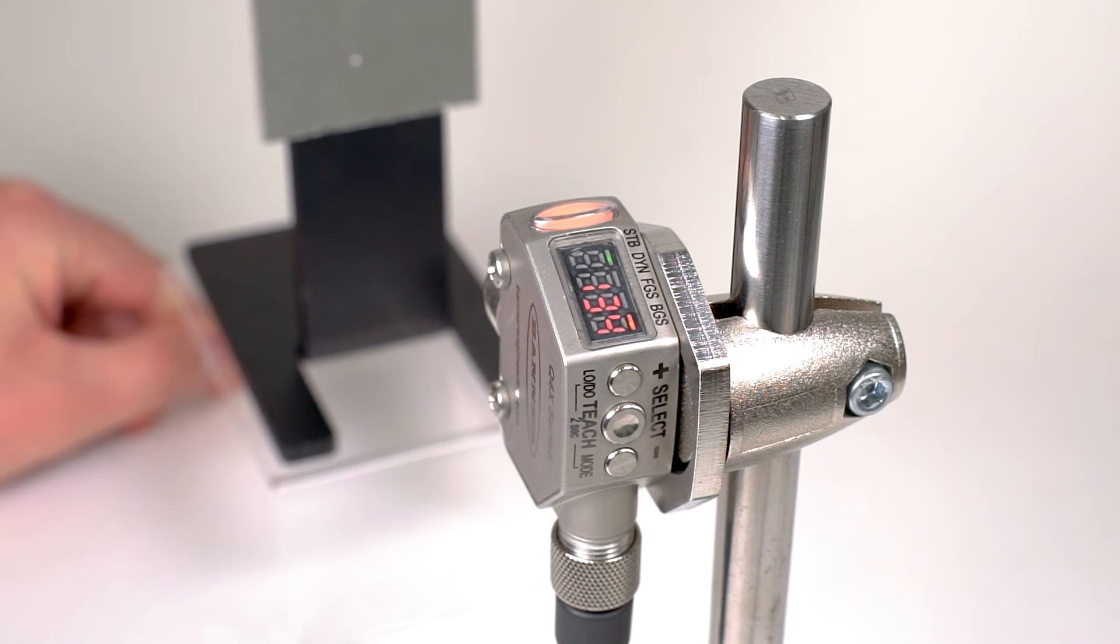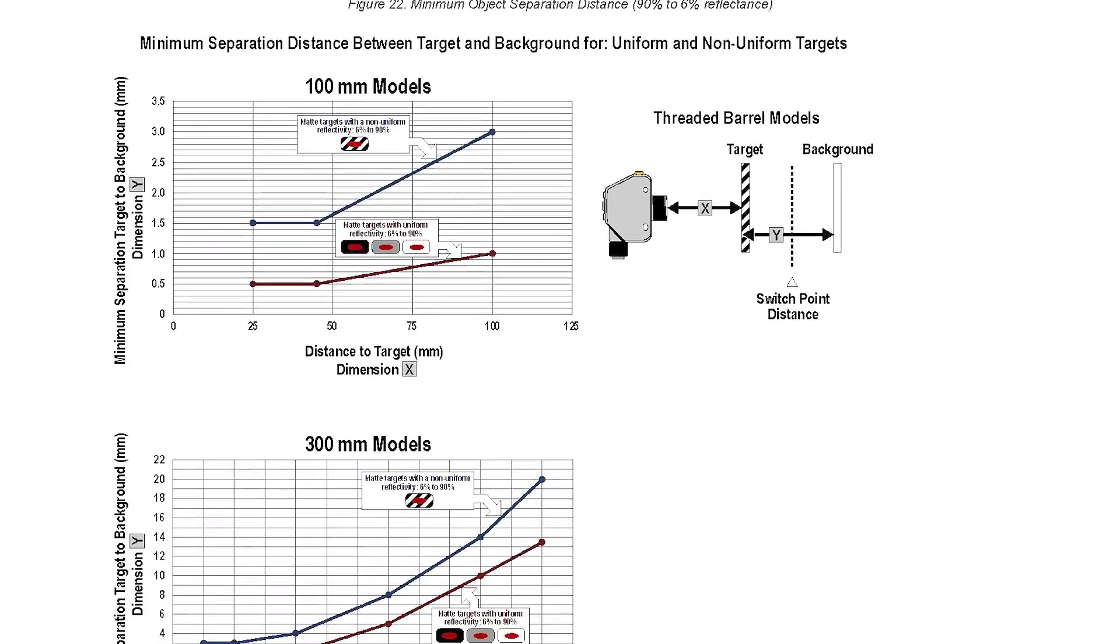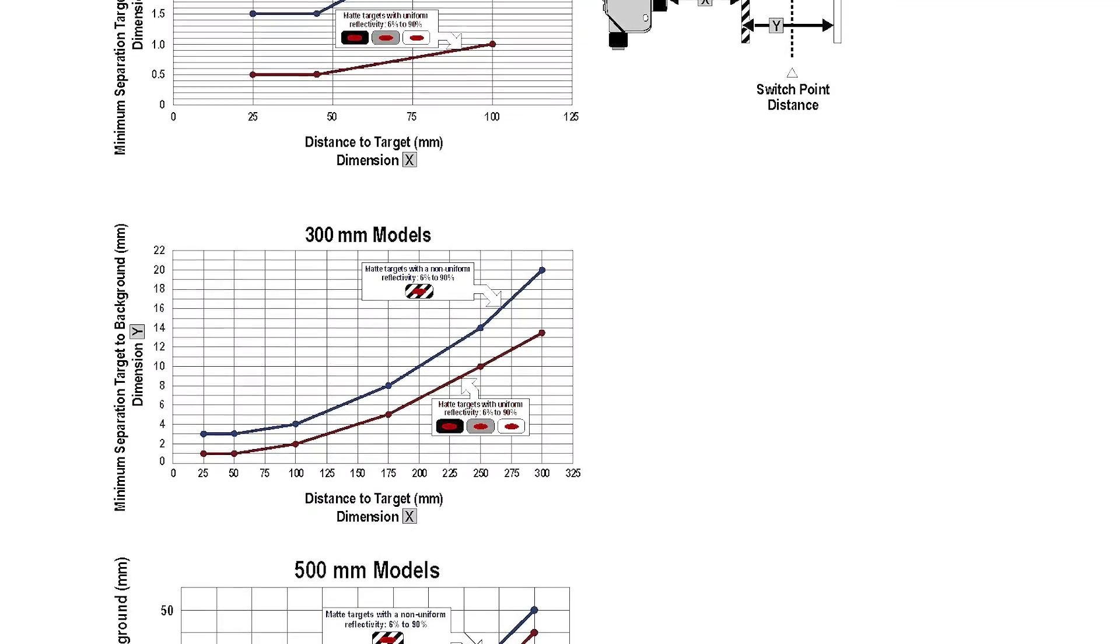The default gap between the taught distance and the switch point is equal to the minimum object separation at the taught distance.